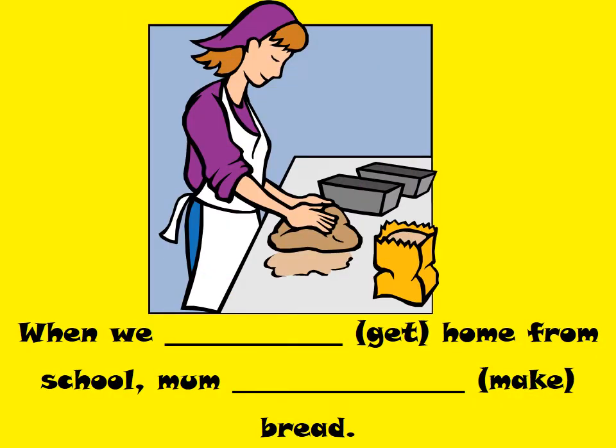What about this one? When we got home from school, mom was making bread. So when we got home — that's the interrupted action. Which one is in progress? Was making. Very good, was making bread.